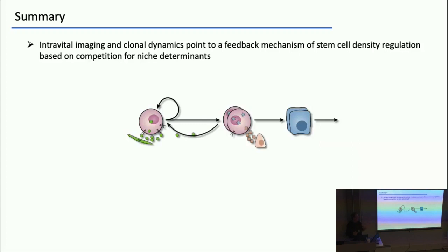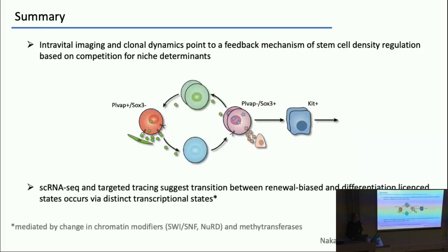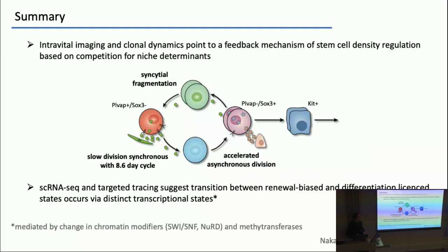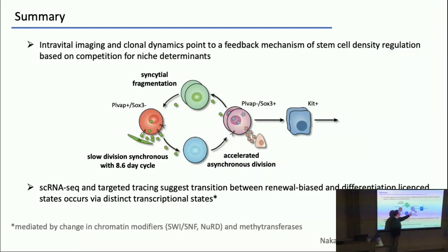Summary: combination of intravital imaging, clonal dynamics, and so on points to this kind of quorum sensing-like feedback mechanism of stem cell competition. RNA-seq analysis suggests that this reversible transition occurs between discrete transcriptional states. An interesting point: the division rate of the PLVAP-high cells is precisely synchronous with the seminiferous cycle — these cells divide exactly once per cycle, like a metronome. But when they get to the primed state, the cell division rate is two to three times higher and more asynchronous.